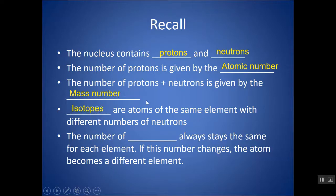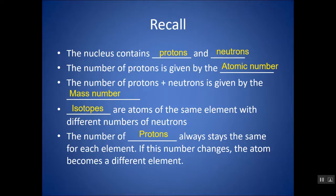Isotopes are atoms of the same element with different numbers of neutrons. The number of protons would be the same, but the number of neutrons can vary, giving them different masses — like C-12 and C-13. The number of protons always stays the same for each element. If this number changes, the atom becomes a different element.